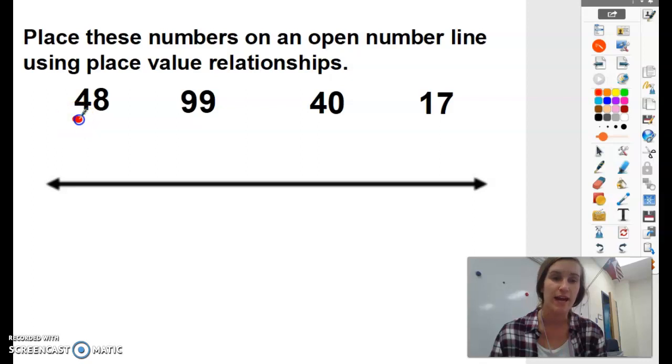So we have the number 48, four tens. 99 has nine tens. 40 has how many tens? Four, good job. And 17 has one ten.